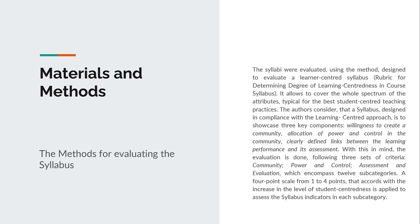With this in mind, the evaluation is done following three sets of criteria: community, power and control, and assessment and evaluation, which encompass 12 subcategories. A four-point scale from one to four points, that accords with the increase in the level of student-centeredness, is applied to assess the syllabus indicators in each subcategory.